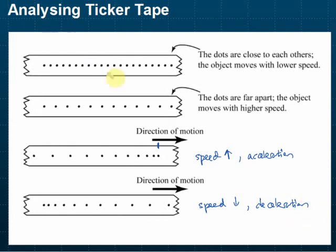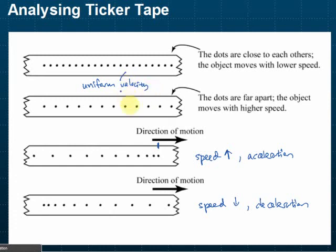For this one, the distance between the dots is the same from the beginning to the end. The distance is the same, so it's a uniform speed — a uniform velocity. This is uniform velocity. That is how we analyze the ticker tape.